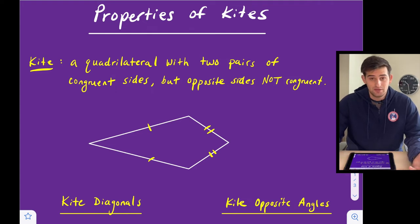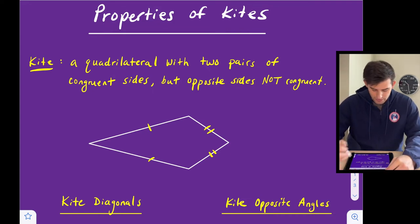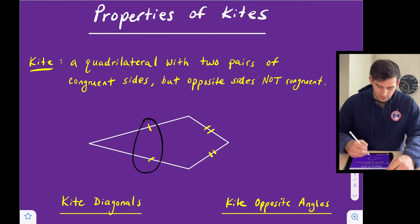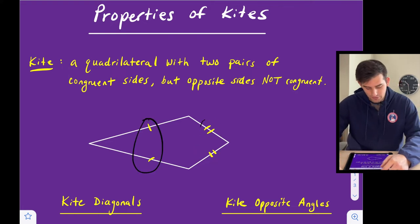So what is a kite? A kite is a quadrilateral, which means it has four sides, but it's a special quadrilateral. It's a quadrilateral that has two pairs of congruent sides. However, the opposite sides are not congruent. So it has to be two consecutive sides or two adjacent sides that are congruent. You can see here we have these two sides are congruent and these two sides are congruent.